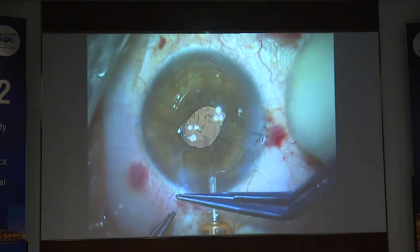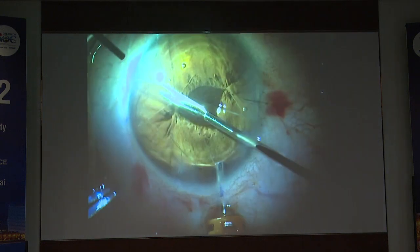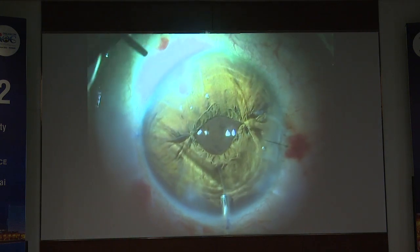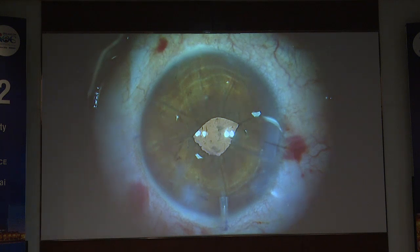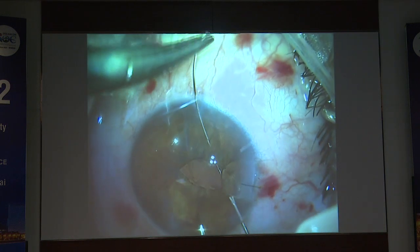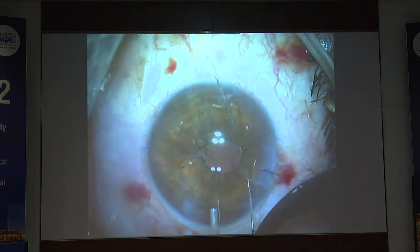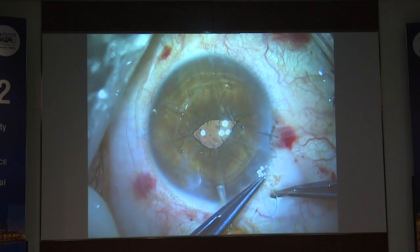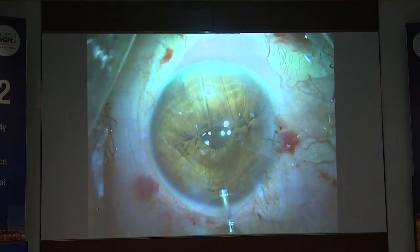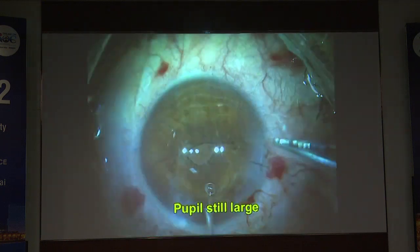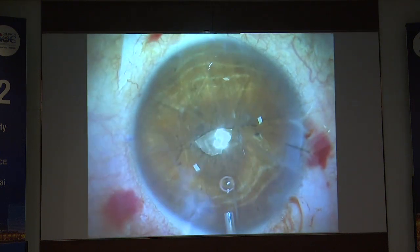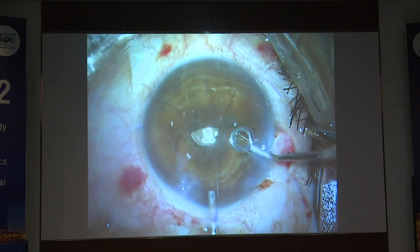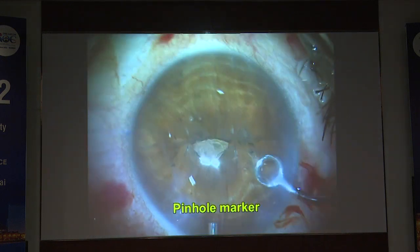You can do as many single-pass four-throw pupilloplasties as you want. I made it smaller, but to make a pinhole I need to make it 1.5mm. The principle is simple: I want to make my pupil small enough to block peripheral rays — light goes through my central 1mm pupil. The Purkinje image P1 must be centered onto the pupil — this is a very important fact.